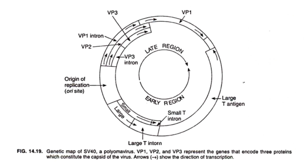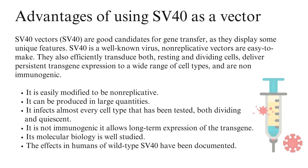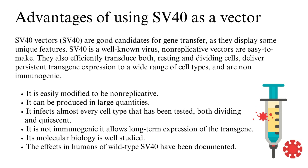The genetic map of the SV40 polyomavirus shows that VP1, VP2, and VP3 represent the genes encoding the three proteins that constitute the capsid of the virus. The arrows on the map indicate the direction of transcription.